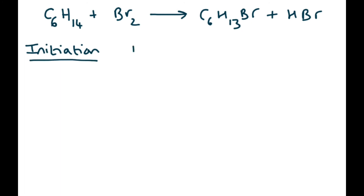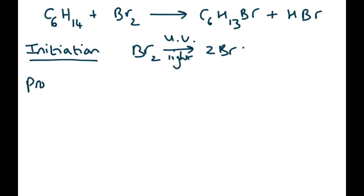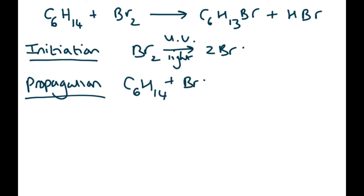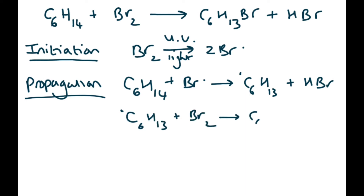With UV light, initiation produces two bromine radicals. The propagation step involves hexane plus the bromine radical giving the carbon radical and HBr. The second propagation step has the carbon radical reacting with a Br₂ molecule, giving the haloalkane and regenerating the bromine radical catalyst.